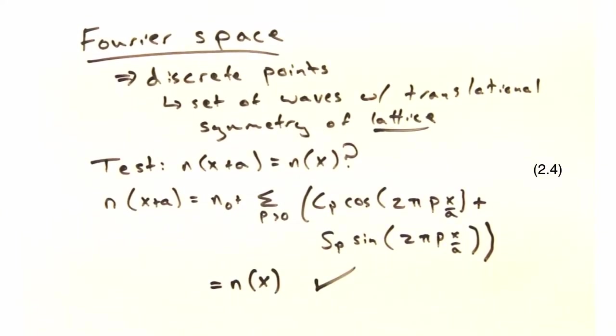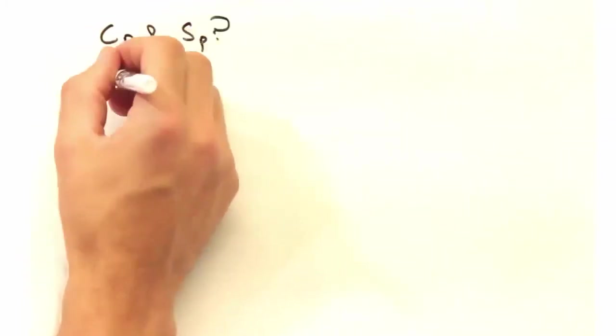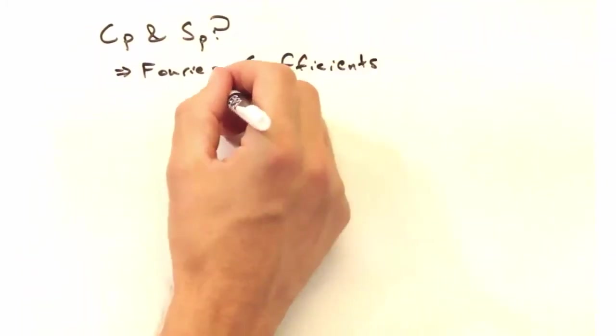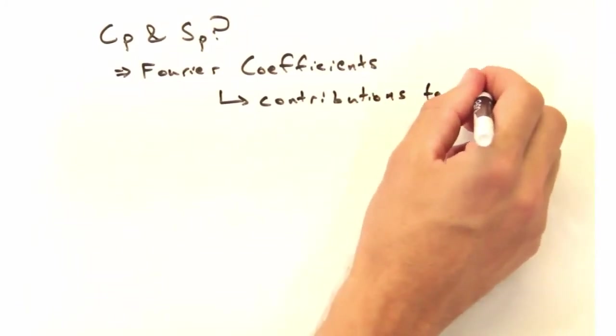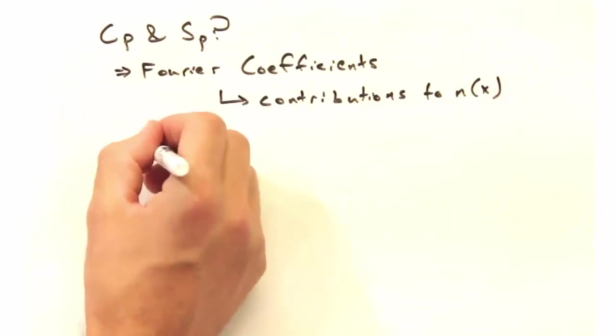But what about these cp and sp coefficients? What do they tell us? Yeah, so in later videos this week we'll pay special attention to these. But in general, these Fourier coefficients tell us a particular wave's contribution to the whole n.